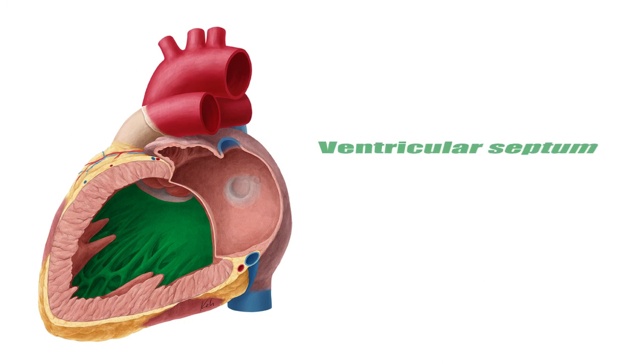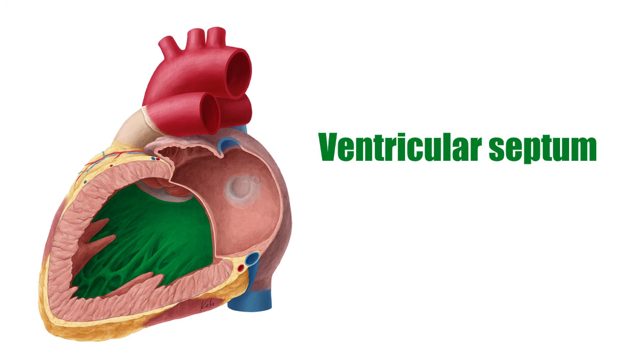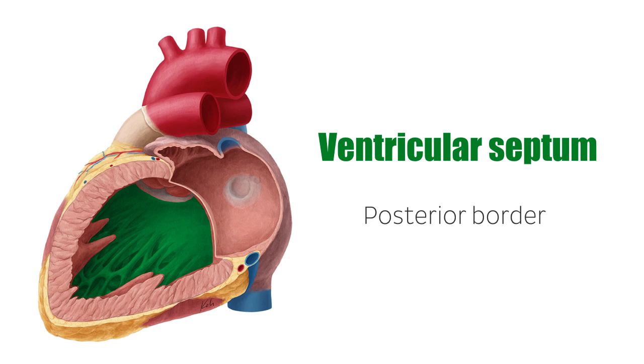The ventricular septum borders the right ventricle posteriorly and bulges somewhat into it, creating a transverse, semilunar cross-section.